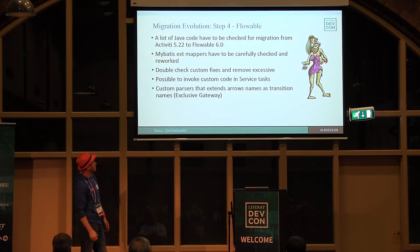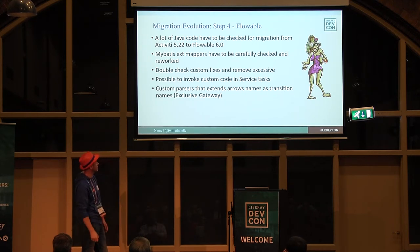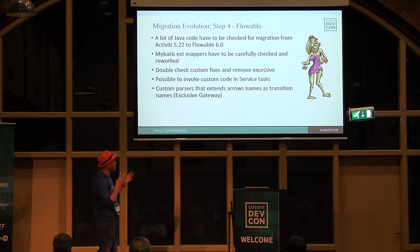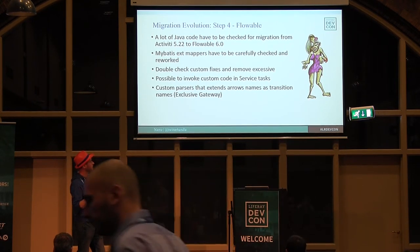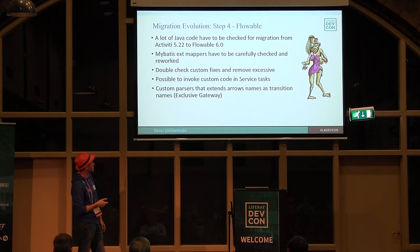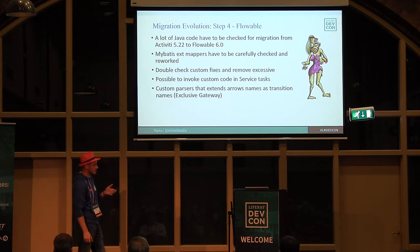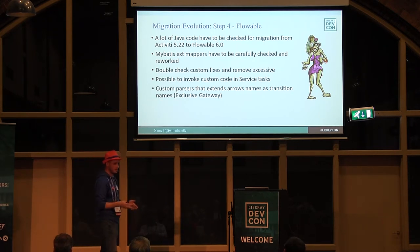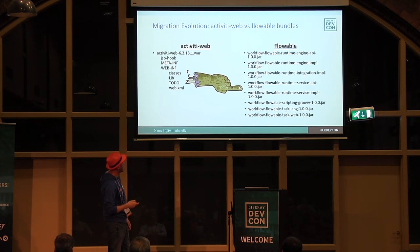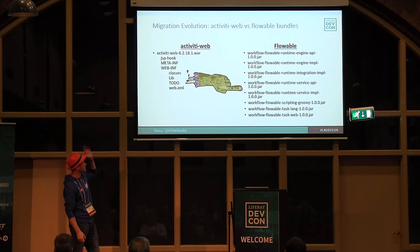What about Flowable? Flowable was migrated from Activiti - it was forked from version 5.22. Of course, there were a lot of things to be done due to code refactoring: package names changed between versions. We had to do a big refactoring, we had to improve MyBatis mappers because Flowable is based on MyBatis, and we had to double-check custom fixes. We added the possibility to invoke custom code in service tasks, and we added some custom parsers to make life easier with LifeRay.